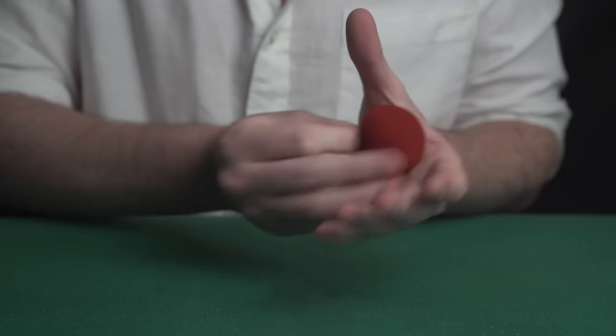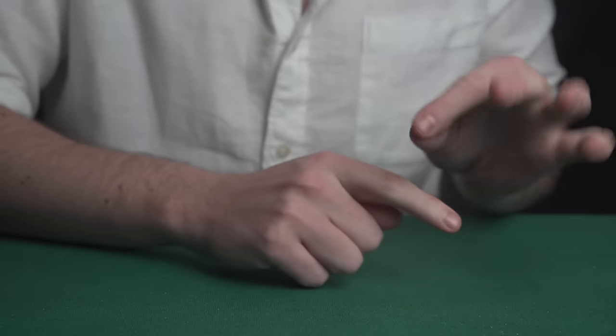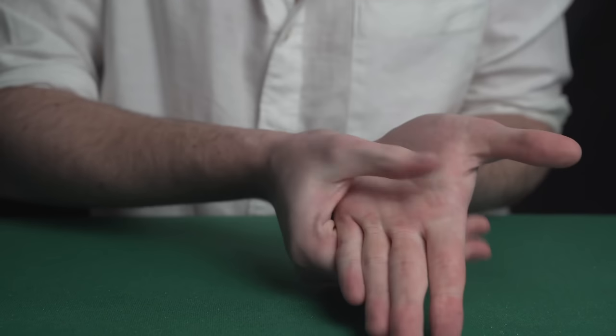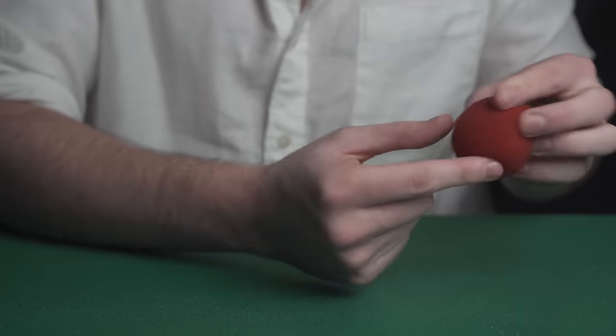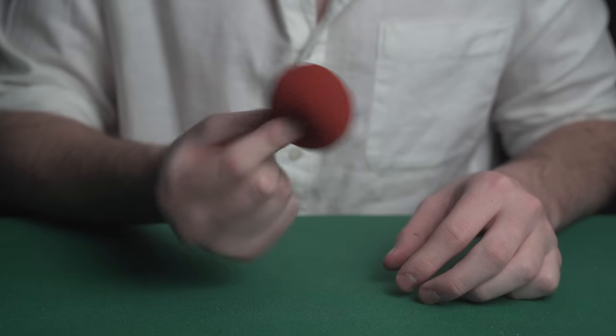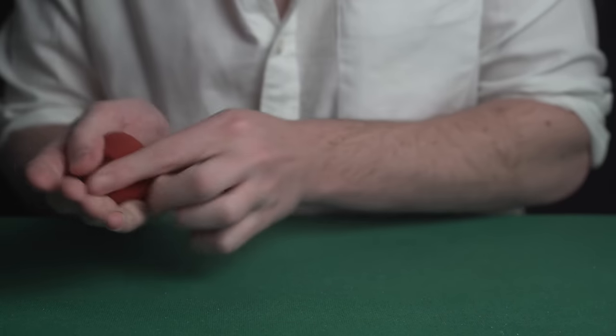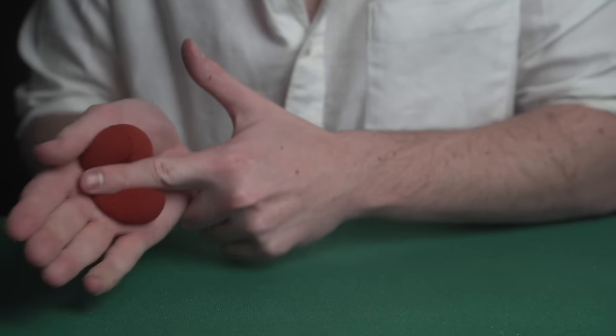The magician takes a red sponge ball, vanishes it and then produces it from his arm. He then rubs the ball and it doubles.